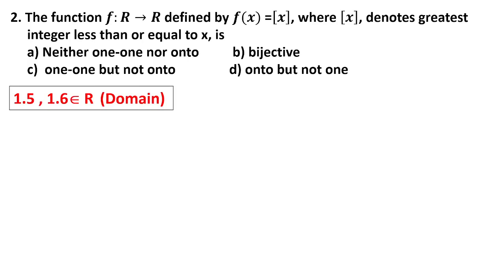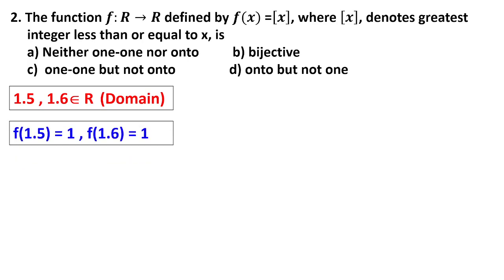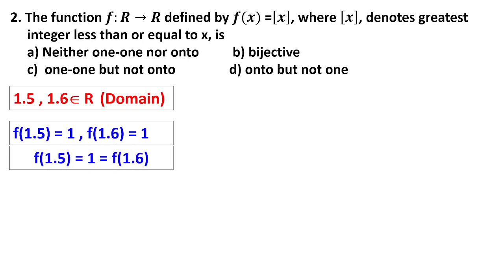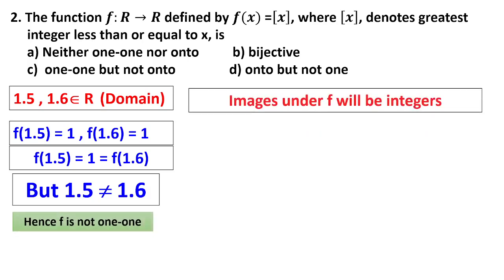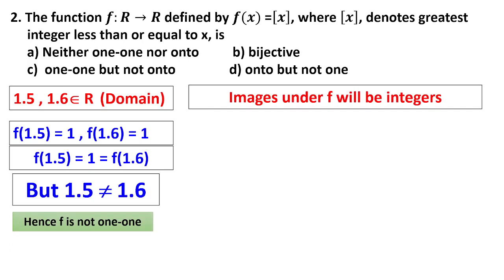We take two elements from the domain, say 1.5 and 1.6, and check their images. The image of 1.5 under the greatest integer function is 1. The greatest integer function gives the greatest integer less than or equal to x. Both f(1.5) and f(1.6) give the same answer of 1, but 1.5 and 1.6 are not equal. Two different inputs give the same image, so it is not one-one.